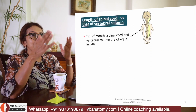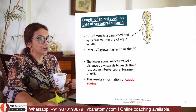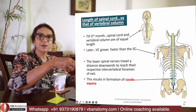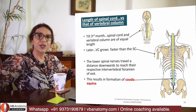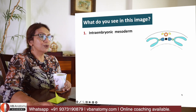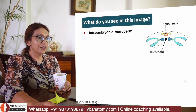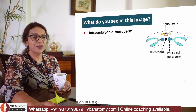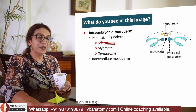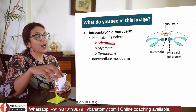The vertebral column is initially the same length as the spinal cord, but later the vertebral column grows much faster. The spinal cord grows slowly and therefore a tail of nerves comes out from the spinal cord trying to exit through their own vertebral foramen — this tail is called the cauda equina. You can see in this image the neural tube, notochord, and mesoderm divided into paraxial mesoderm, intermediate mesoderm, and lateral plate mesoderm. The paraxial mesoderm itself is divided into sclerotome, myotome, and dermatome.